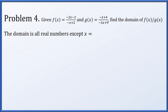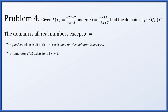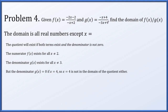For problem four, given f(x) equals (negative 2x minus 2)/(negative x plus 2) and g(x) equals (negative x plus 4)/(negative 3x plus 9), find the domain of the quotient f(x)/g(x). A quotient exists provided both numbers exist and you are not dividing by zero. f(x) exists except for x equals 2, and g(x) exists except for x equals 3. Additionally, when x is 4, g(x) equals zero, so f(x)/g(x) still doesn't exist. So x cannot be 2, 3, or 4.